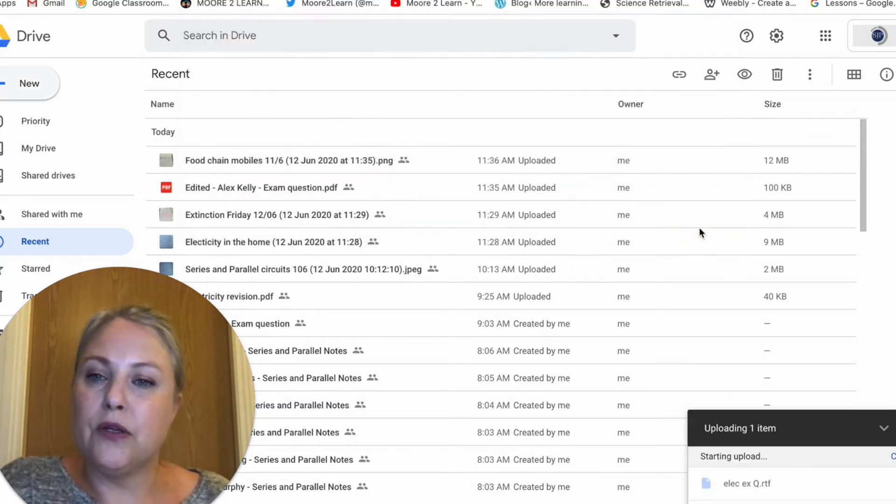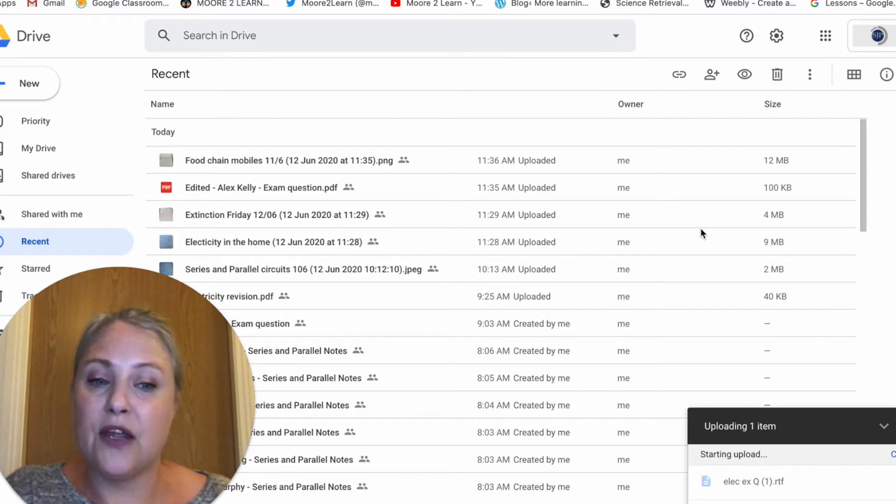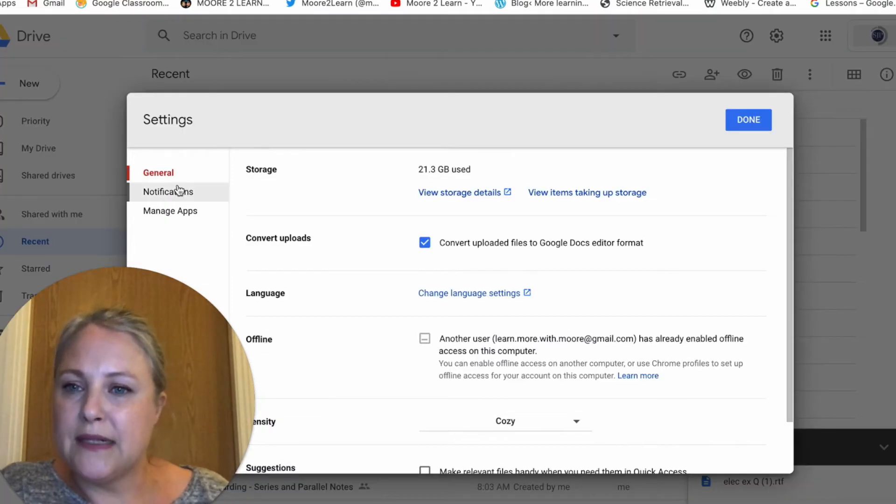Now the reason mine automatically saves as a Google Doc is because in my settings, in General, Convert Uploads, I have got my settings to always convert into a Google Doc format. So it will automatically change from Word to a Doc.